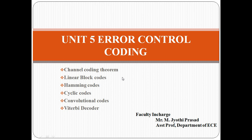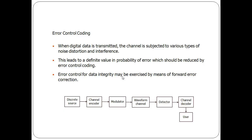Hi everyone, myself Jyothi Prasar from RMD Engineering College. We are going to discuss about error control coding in digital communications. First we will see the introduction to linear block codes and why we need error controlling. In a typical block diagram of a communication system, we encode discrete sources into a modulated wave with the help of a channel encoder and modulator. We send this through a channel and at the receiver we detect and convert it back to the original form. While doing this, some errors may happen — how are we going to control those errors?